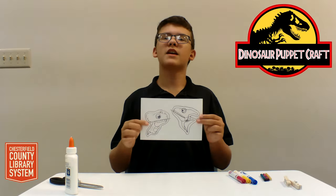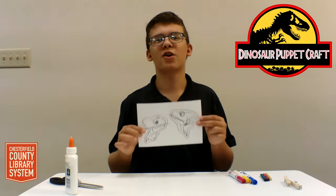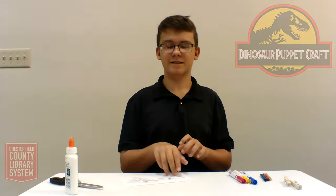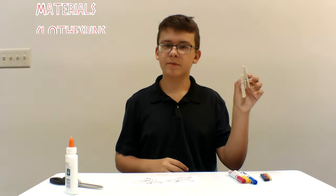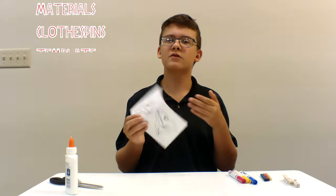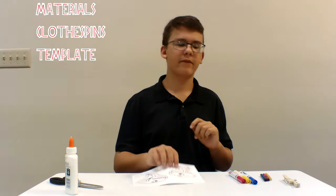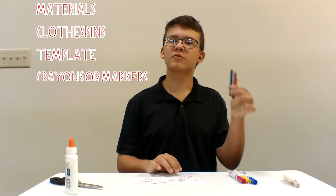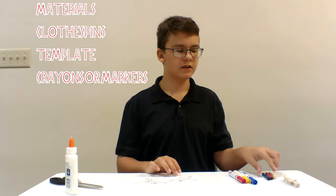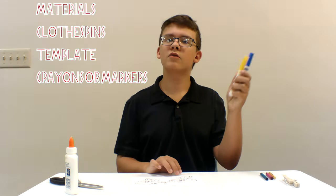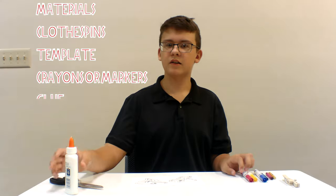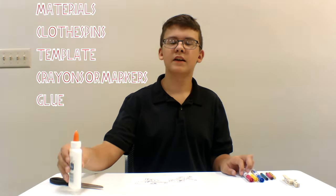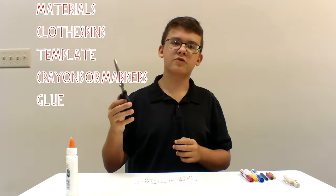Today, we will be doing the Dinosaur Clothespin Puppet Project. What you will need for this project is two clothespins, the Dinosaur Puppet Template Sheet, crayons or markers, glue, and something to cut your dinosaur puppet out.